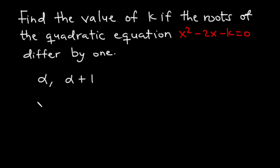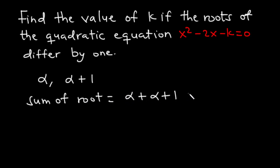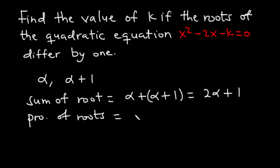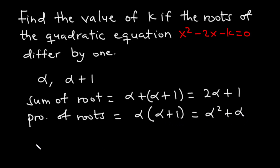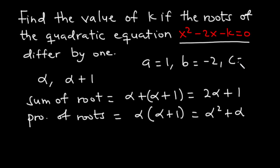The sum of the roots is equal to alpha plus (alpha plus 1), which gives us 2 alpha plus 1. The product of the roots is alpha times (alpha plus 1), which expands to alpha squared plus alpha. From the equation, we identify a equals 1, b equals negative 2, and c equals negative k.